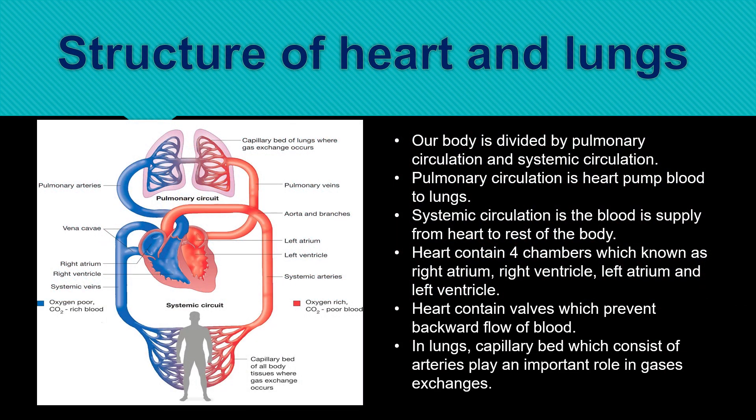First, we focus on the structure of the heart and lungs. Our body is divided by pulmonary circulation and systemic circulation. Pulmonary circulation is the heart pumping blood to the lungs, while systemic circulation is the blood supplied from the heart to the rest of the body. The heart contains four chambers: right atrium, right ventricle, left atrium, and left ventricle. The heart contains valves which prevent backward flow of blood. In the lungs, the capillary bed, which consists of arteries, plays an important role in gaseous exchange.